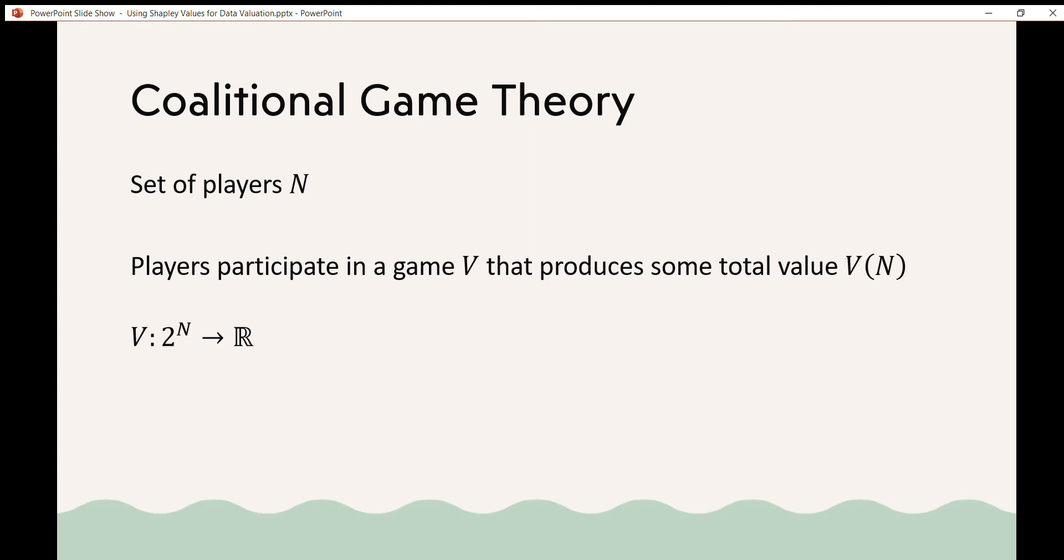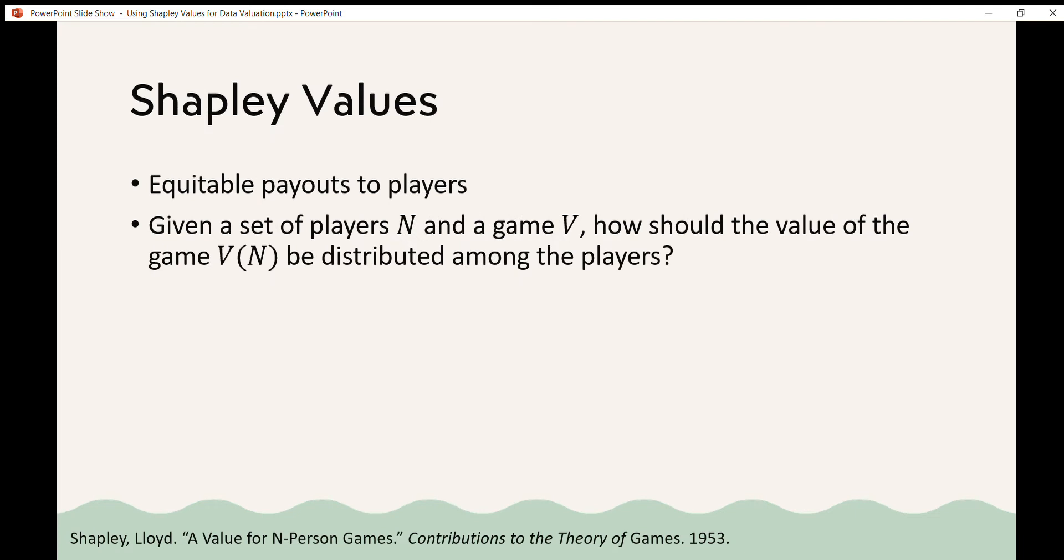Where v is just a set function that takes some subset of n and produces a real value. So the idea behind Shapley values is to give equitable payouts to players. So given a set of players n and a game v, how should the value of the game, v of n, be distributed back among the players?